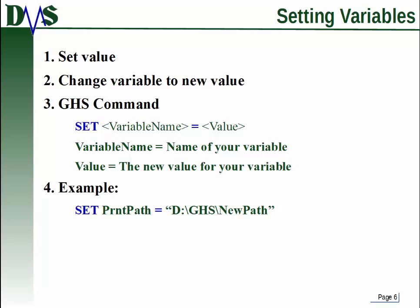For example, if I wanted to set my print path and change it to a new drive letter, I would do SET print path equals D colon GHS new path. Now notice that when I'm doing this set command, I have to refer to variables that have already been created. Can't just reference something that doesn't exist.